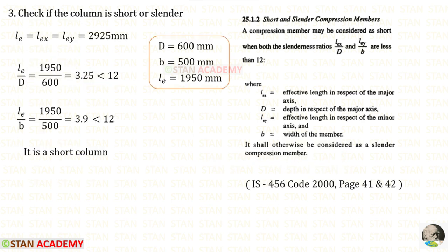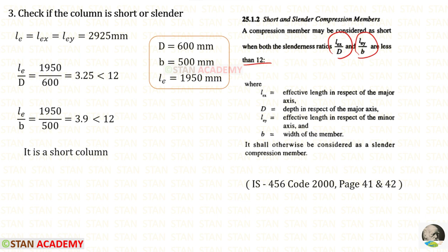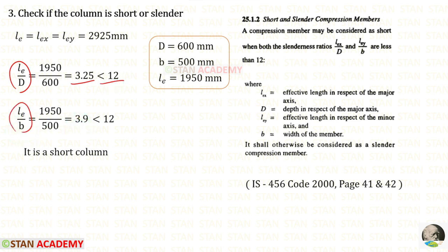Now let us check if the column is short or slender. Let us open the code book page number 41. The slenderness ratios should be less than 12 for the column to be short. In our case, LEX and LEY are both equal to the effective length LE which is 1950 mm. LE upon D gives 3.25, which is less than 12. LE upon B gives 3.9, which is also less than 12. So it is a short column.